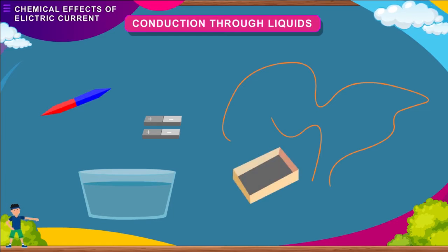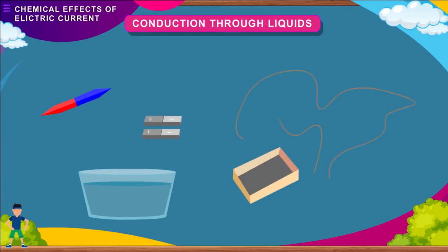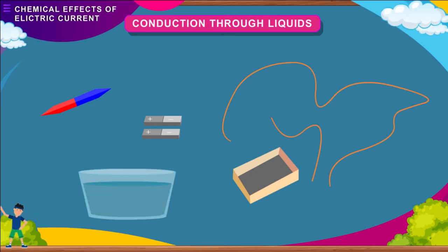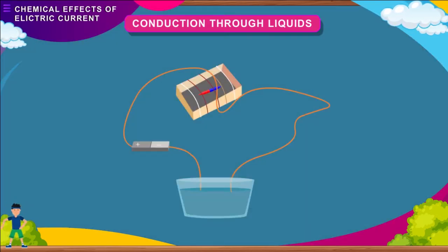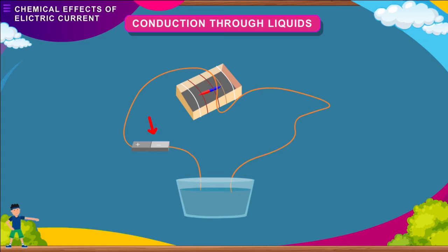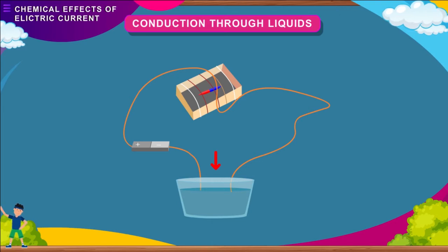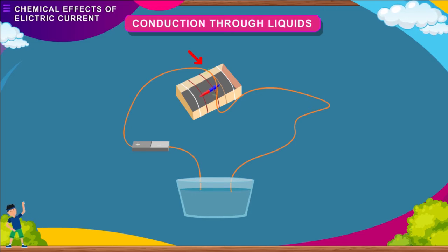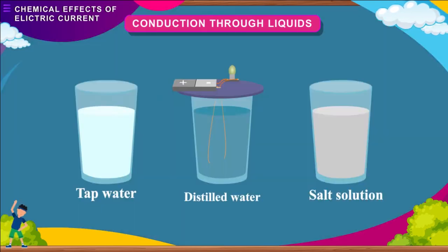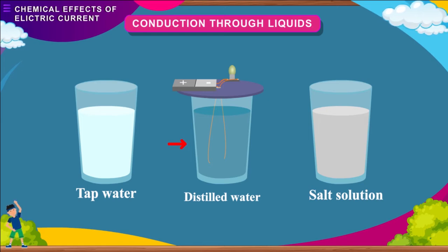For another conduction activity, you need a compass needle, empty matchbox, two electric cells, some wires, a plastic bottle cap, and liquids to be tested. Keep the compass needle inside the empty tray of the matchbox and wrap a couple of rubber bands around it. Connect the wires to the battery and immerse two wires in the liquid kept in the plastic bottle cap. When current flows through the wire, there is deflection in the compass needle, showing that the liquid conducts electricity. Although distilled water is a poor conductor as it lacks free ions, when salt is dissolved in it, it becomes a good conductor.